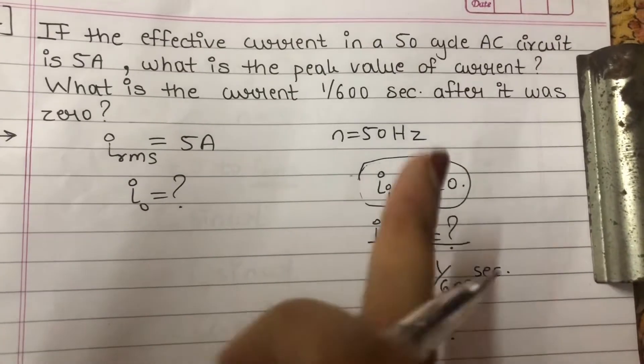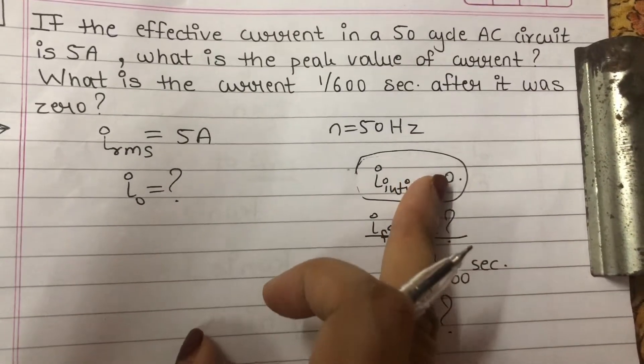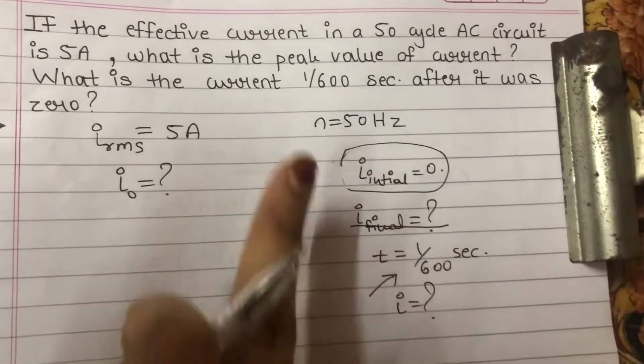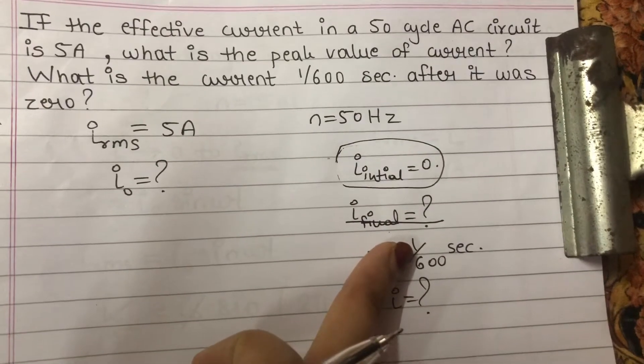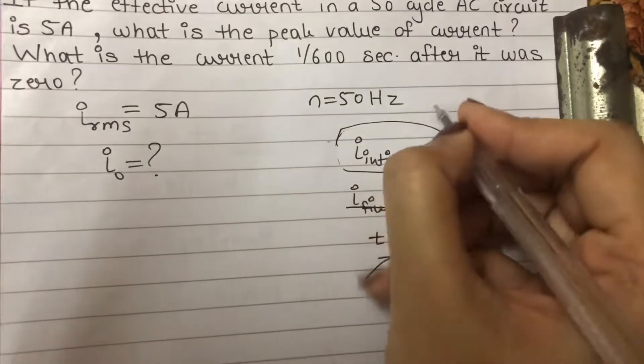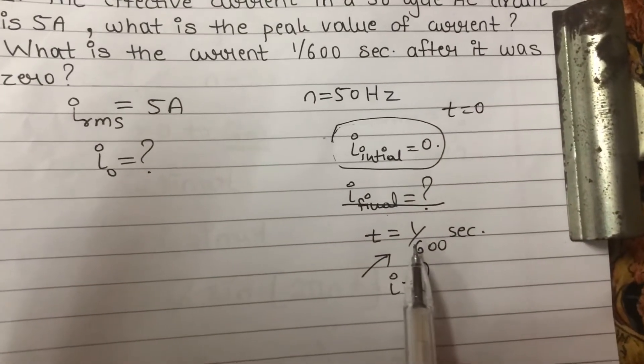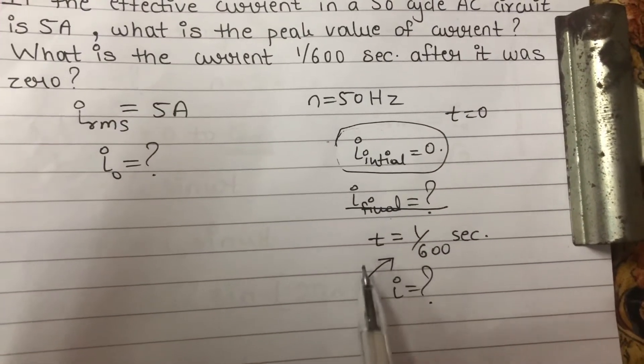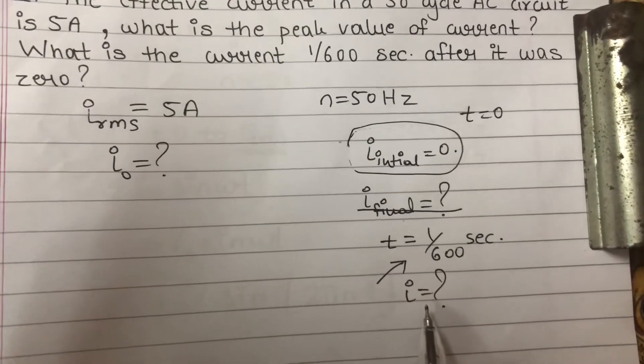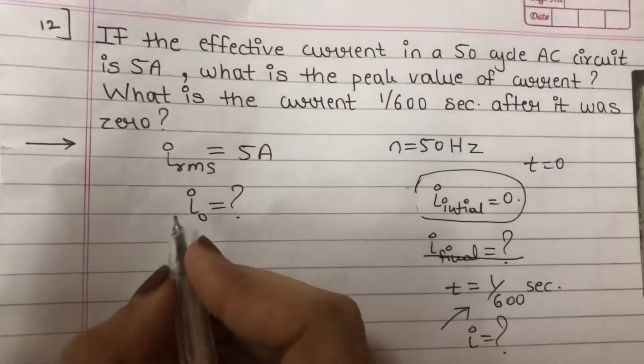Now, what will be the value of the current, final current? This becomes easy for you. Initially, of course, always current will be 0. So at this time, initially when current is 0, then time will also be 0, starting. But when we reach this time, at that time what is the current value? That we need to find out.